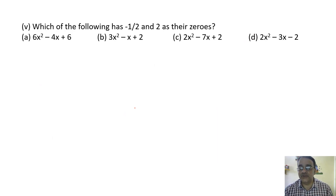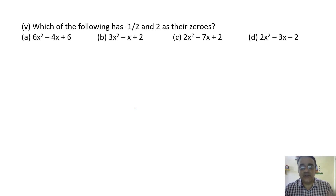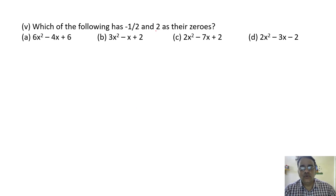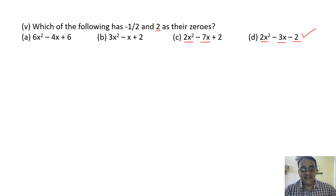Which of the following has minus 1 by 2 and 2 as zeros? Use the elimination method for MCQ: substitute x equals 2 into each option. For the first option: 8 minus 14 plus 8 minus 6, not zero — eliminated. For option C: 12 minus 2 plus 2, not equal to zero — eliminated. For option D: 6 into 4 minus 8 plus 6, not zero.